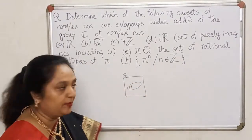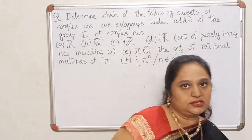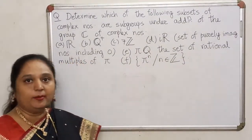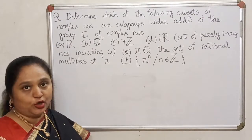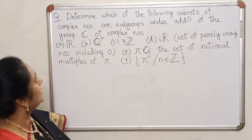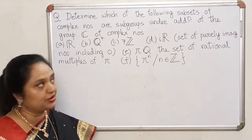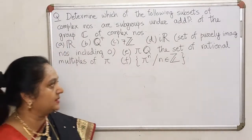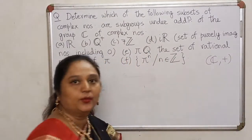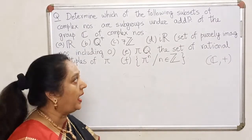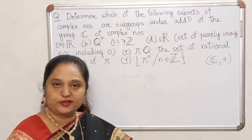I also gave you one example of a subgroup and one example of something which is not a subgroup in the last lecture. So let us look at some more examples to begin with. The question is: a particular group is given to us — determine which of the following subsets of complex numbers are subgroups under addition, the usual addition of the group C of complex numbers. So our parent group is the set of complex numbers with respect to addition, and the question is which of these are examples of subgroups.